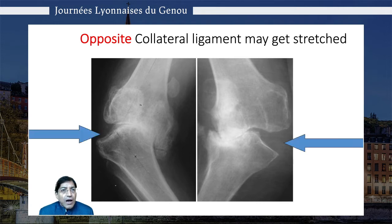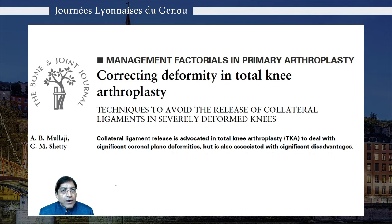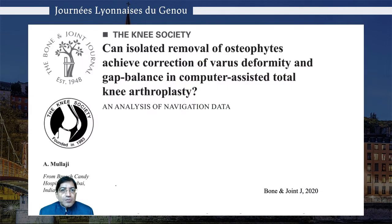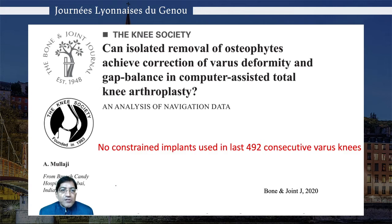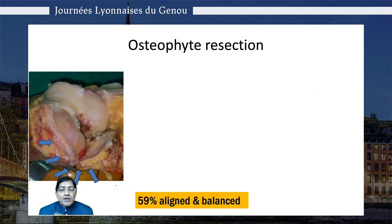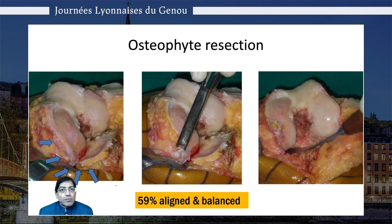We've reported how to correct deformity without releasing the collateral ligaments. Let's look at the steps in a varus knee. We recently published this paper in the Bone and Joint Journal where we looked at nearly 500 consecutive varus knees, and we have not used any constrained implants in all these cases. In about 10% of them, merely by exposure and excising the cruciates with no release except for the deep MCL, we were able to achieve alignment and balance.